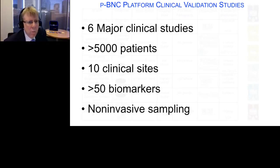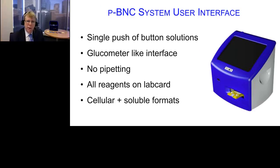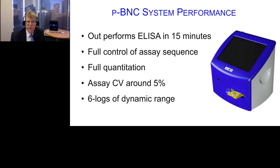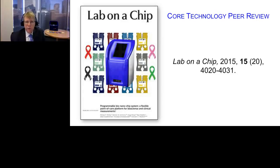We've run a series of clinical trials with a large number of patients across many areas: six major trials, over 5,000 patients, 10 clinical sites, many biomarkers, all using noninvasive sampling. The purpose is to identify appropriate patient populations and bring in new fingerprints that can capture diseases earlier. The system works much like a glucometer — no pipetting step, simply a drop of bodily fluid on a target zone, and everything else happens within the lab card and instrument. We've spent over 100 person-years engineering biomarker capture, achieving lab-quality results at the point of care. The core technology is published in Lab on a Chip.